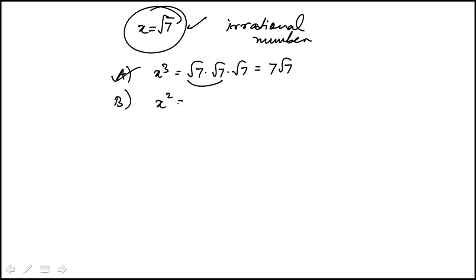x square would be, squaring this, 7. That is not an irrational number. In fact, that's rational. So B is out.